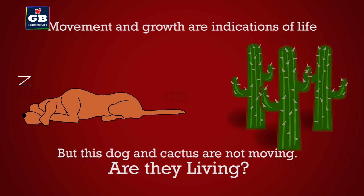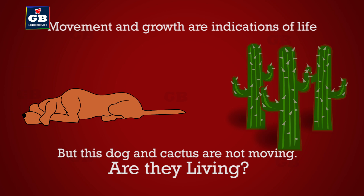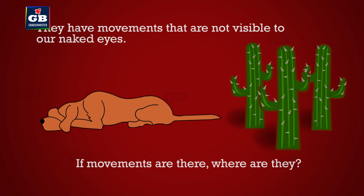But sometimes we find living things without any visible movement. For example, this sleeping dog and this cactus — at this instance we notice neither movement nor growth. But it doesn't mean they are not living. They have movements that are not visible to our naked eyes.